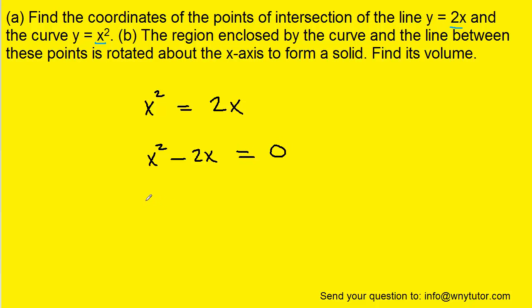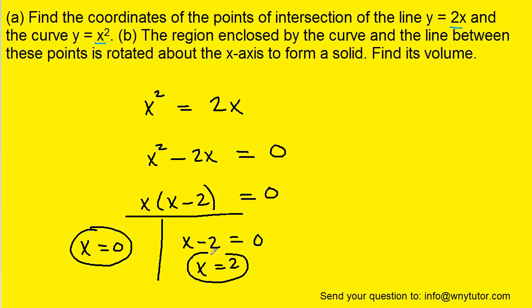We can then factor out an x on the left side, leaving us with x times x minus 2. Then we can set each factor equal to 0 and solve each equation for x. We'll add the 2 over to the right-hand side to get the x-coordinates of the two points of intersection.